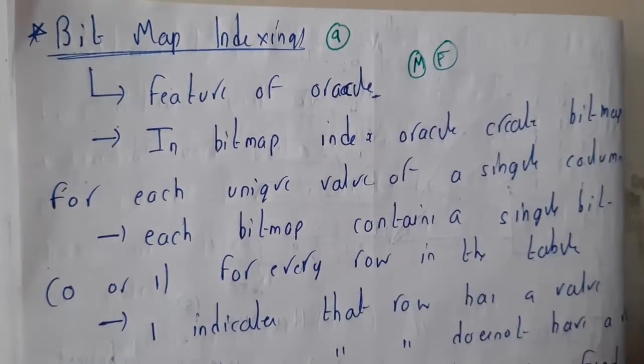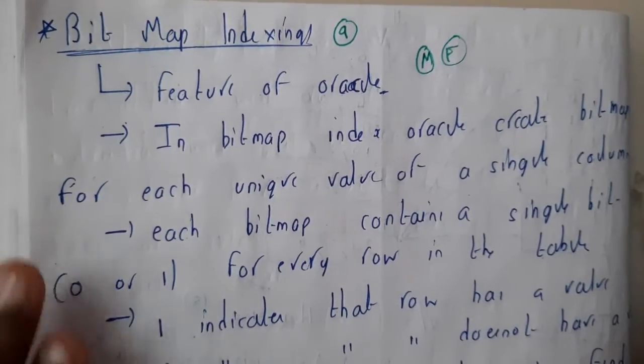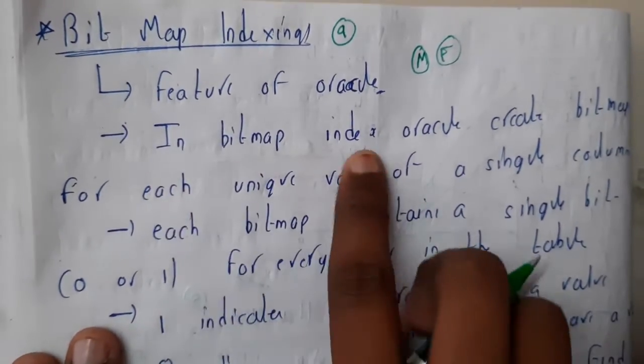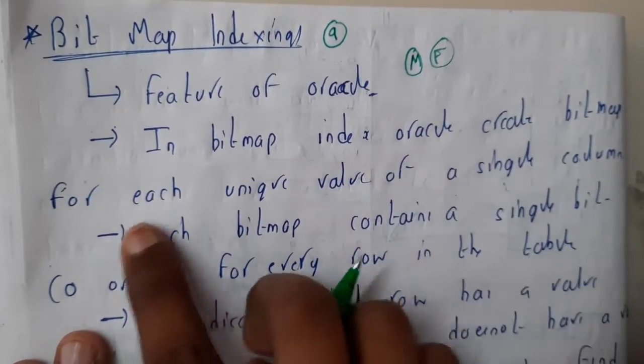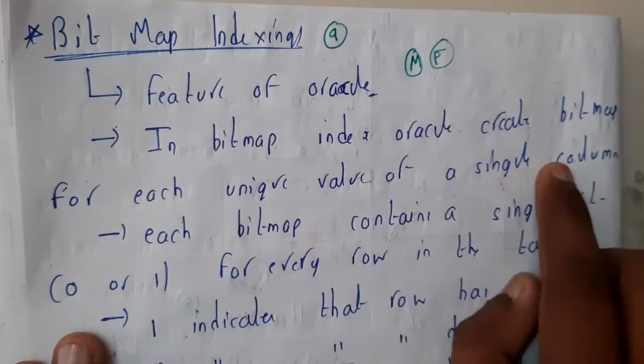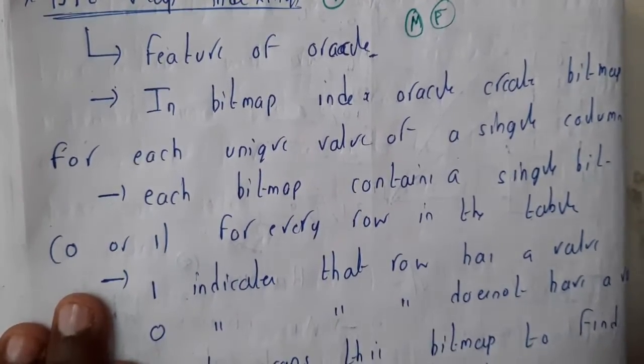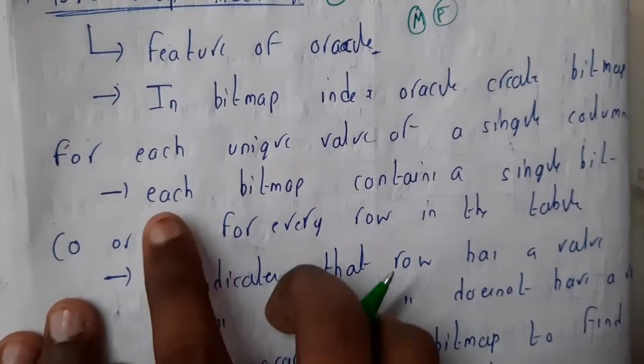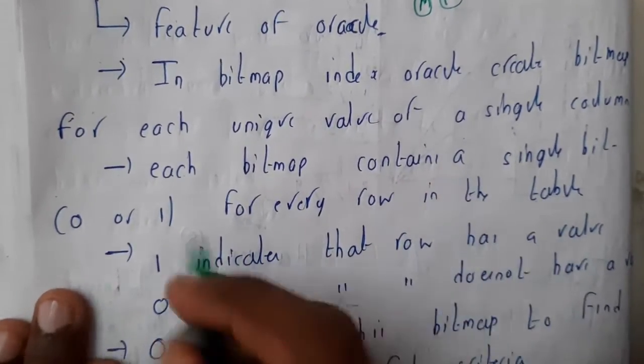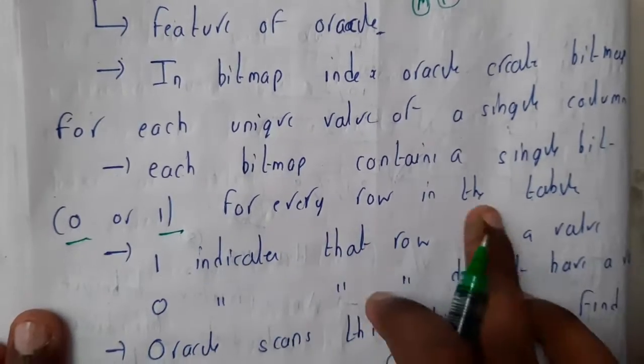In bitmap index, Oracle creates bitmaps for each unique value of a single column. For each column, it is going to create it. Each bitmap contains a single value, either zero or one, for each record in the database. One indicates that the row has a value, and zero indicates that it does not have a value.